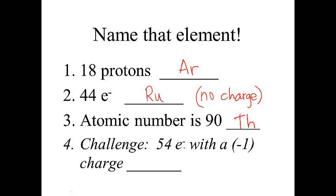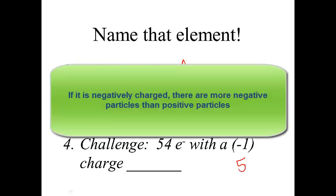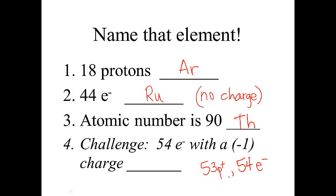Now a challenge. If it has 54 electrons and a negative 1 charge, then it has 53 protons. One more electron than proton. The atomic number is based on the number of protons. So iodine is the element, and it has a negative 1 charge.